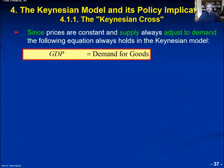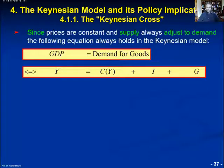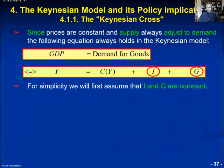Let's start again with Keynes' theorem: GDP equals always the total demand for goods. The total demand for goods equals consumption demand plus investment goods demand plus government consumption demand. For simplicity, we will assume that investment goods demand and government consumption demand are constant. As we will later see, investment goods demand depends on the interest rate determined on the capital market, while government consumption demand is exogenously determined by the government.